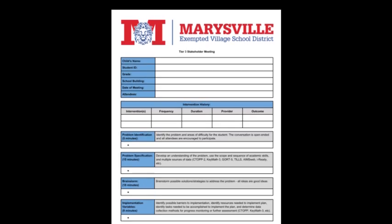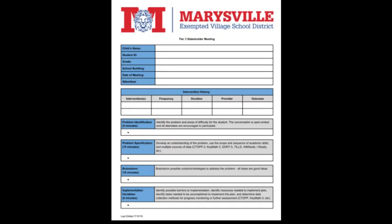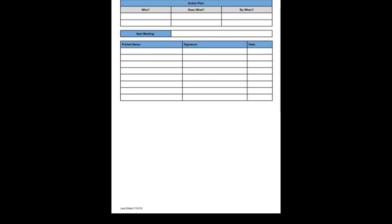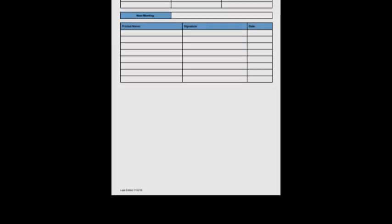The categories on this sheet include problem identification, problem specification, brainstorm, and implementation variable. The next part has an action plan: who does what by when? At the bottom there's printed name, signature, and date. I don't know exactly who would be signing there — possibly those listed as attendees at the stakeholder meeting.